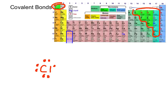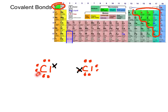It turns out chlorine can bond to itself to become stable. If one chlorine tried to give an electron to the other, this one would have a full outer shell, but the one that gave it away would only have six outer electrons. The same problem occurs in the other direction. This is why non-metals don't actually form ionic bonds.